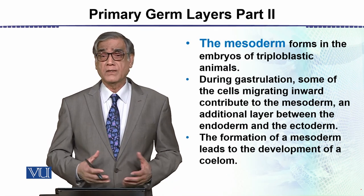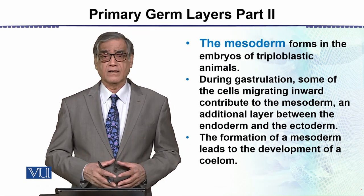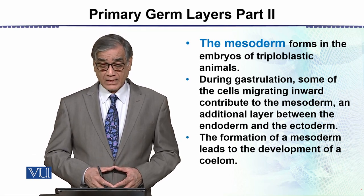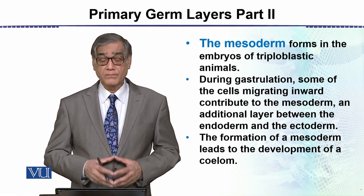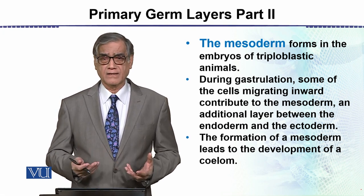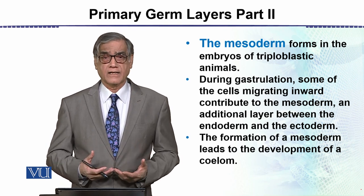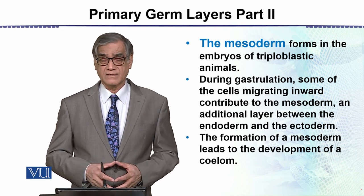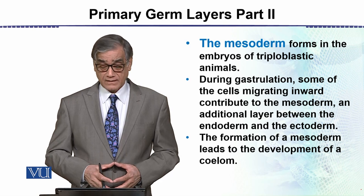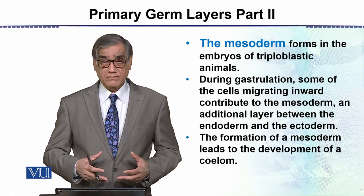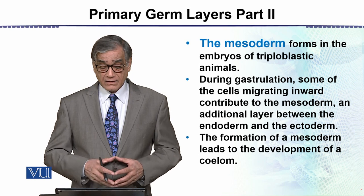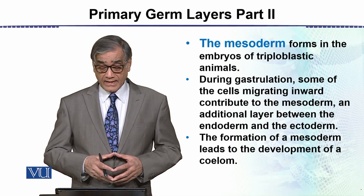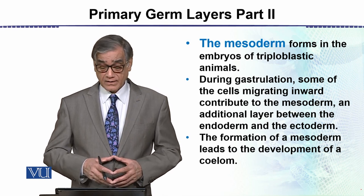Now it comes to the mesoderm. The mesoderm is very complex, with different types of cells derived from it. The mesoderm forms in the embryo of triploblastic animals. In diploblastic animals, such as the cnidarians, there is no mesoderm. But in triploblastic animals, gastrulation produces three layers, and some cells migrate inward to contribute to the mesoderm — an additional layer between the endoderm and the ectoderm.